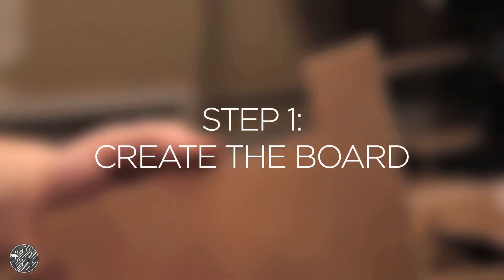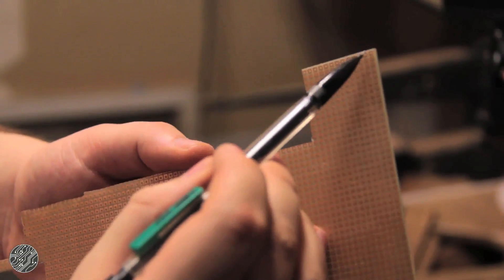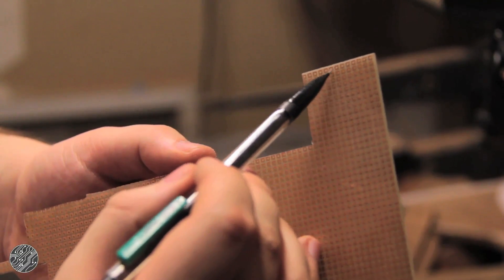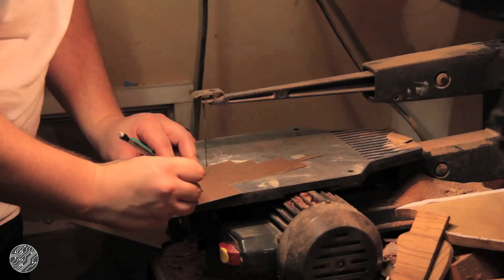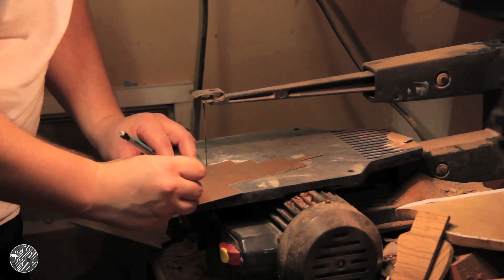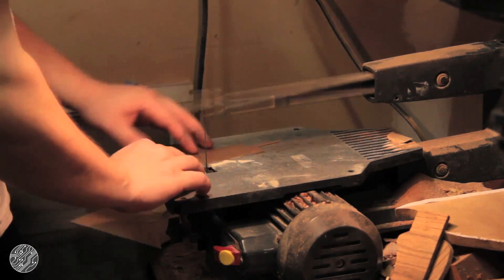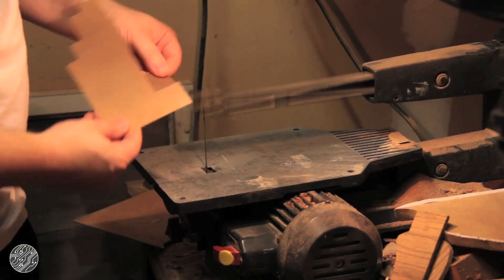So first let's get started with cutting out our board. Step one: create the board. First you want to find the size of your board. In this case it's 12 holes tall by 14 holes wide. Now mark the size with a pencil or a marker. I use a scroll saw to cut the perfboard, but you can use a hacksaw or utility knife as well.